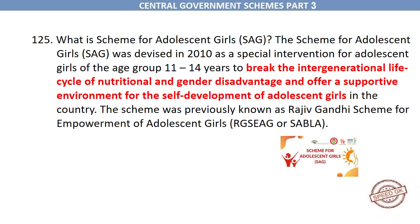What is the Scheme for Adolescent Girls? The Scheme for Adolescent Girls was devised in 2010 as a special intervention for adolescent girls of the age group 11 to 14 years, to break the intergenerational life cycle of nutritional and gender disadvantage and offer a supportive environment for the self-development of adolescent girls in the country. The scheme was previously known as the Rajiv Gandhi Scheme for Empowerment of Adolescent Girls.